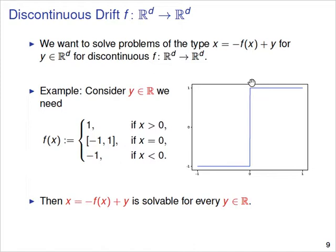If you would instead like to use an explicit equation, it does not really make sense to interpret the jump as a multivalued setting, because it is not clear which of the many points you should choose. In the implicit equation, the equation itself dictates which point we choose. So even though we have a multivalued mapping, the solution will always be single-valued, and this multivalued setting really only makes sense in an implicit type of equation.